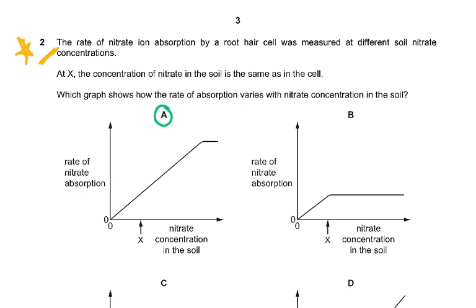The question was: the rate of nitrate ion absorption by a root hair cell was measured at different soil nitrate concentrations. At point X, the concentration of nitrate in the soil is the same as in the root hair cell — say the concentration inside is 10 and outside is also 10.